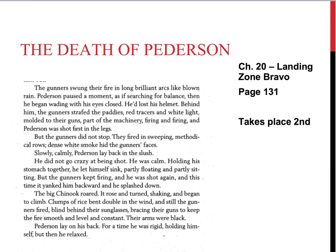We are going to look at the death of Pedersen. Jim Pedersen is one of our characters. He is killed in Landing Zone Bravo in Chapter 20. And we can see that right here — Pedersen, shot first in the legs. That takes place on page 131. That one's pretty easy to identify that he's killed.